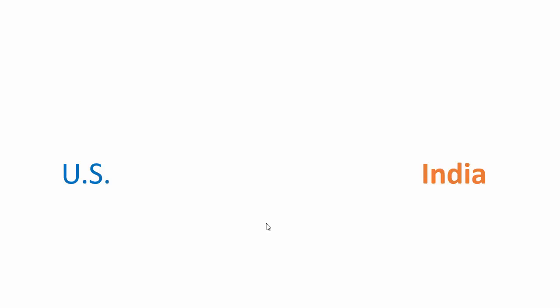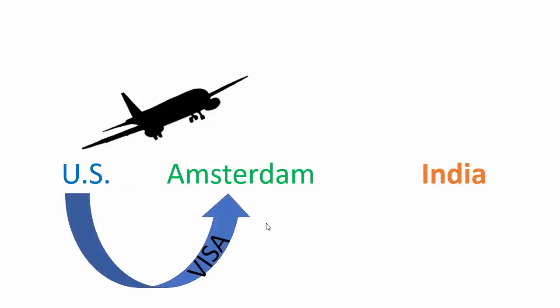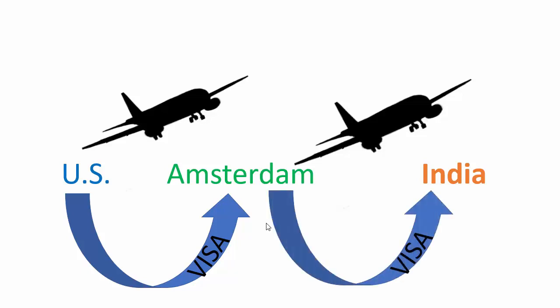Another way to think about composite functions: say I wanted to fly from the US to India. I can't do it with a direct flight, so I'd fly from the US to somewhere in Europe like Amsterdam, and I'd need a visa to be in Amsterdam. Then I'd fly from Amsterdam to India, needing another visa. The domain is like credentials you need to be eligible to fly each leg. A composite function is a multi-stop trip: you start, land somewhere, then take a new plane to your destination.